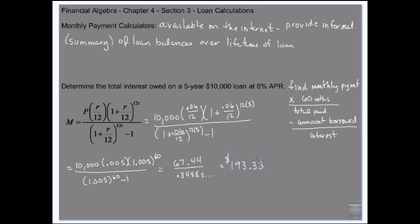Which is going to give me 67.44 divided by 0.34885 and some other stuff. So if I borrow $10,000 at 6% for five years, I'm paying $193.33 monthly.